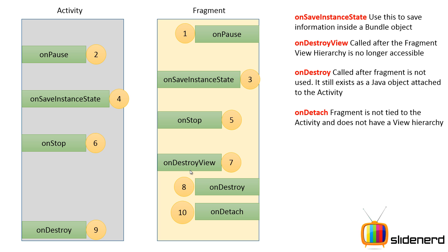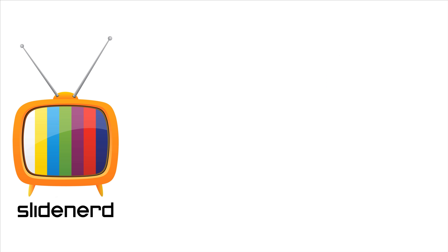So in this video we have talked about the different methods involved in the fragment's lifecycle. In the next two videos we'll be talking about the fragment lifecycle individually, and then the fragment lifecycle coupled and combined with the activity lifecycle to understand the effect of what happens when. If you like what you saw, please subscribe to my channel and comment to let me know your thoughts. Thanks for watching, I'll catch you guys in the next bit — have a nice day.